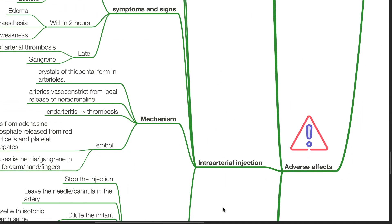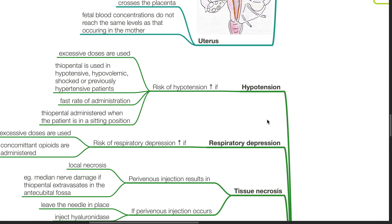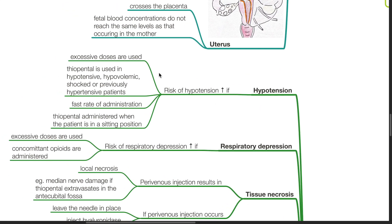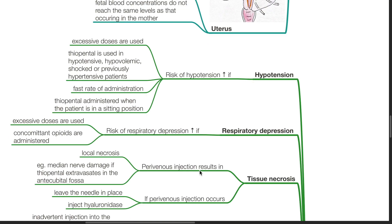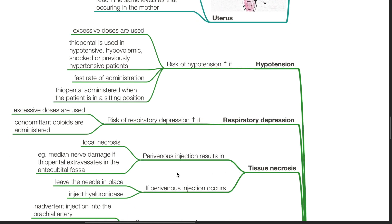Adverse effects of thiopenthal. Hypotension: the risk is increased if excessive doses are used, when thiopenthal is used in hypotensive, hypovolemic, shocked, or previously hypertensive patients, with a fast rate of administration, or when the patient is in a sitting position. The risk of respiratory depression increases if excessive doses are used or concomitant opioids are administered. Tissue necrosis: perivenous injection results in local necrosis and median nerve damage can occur if thiopenthal extravasates in the antecubital fossa. If perivenous injection occurs, leave the needle or cannula in place and inject hyaluronidase.